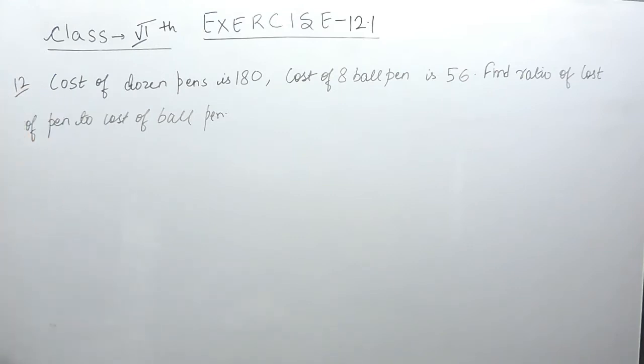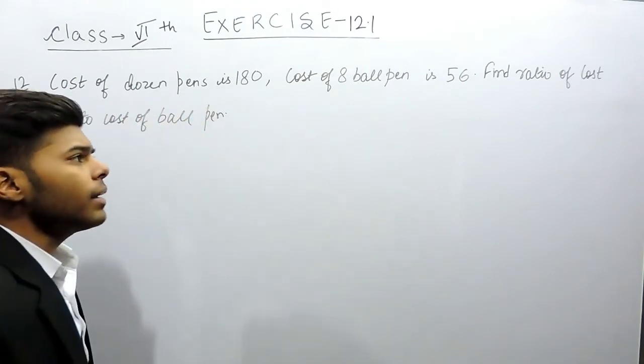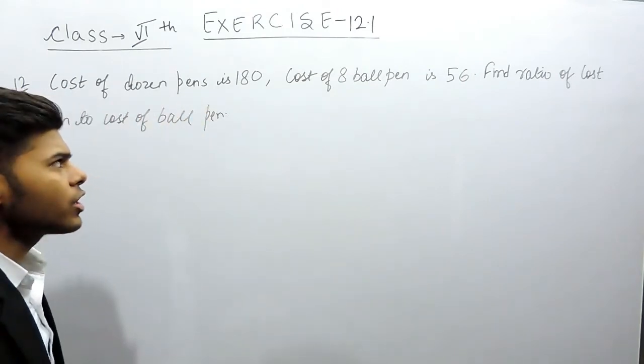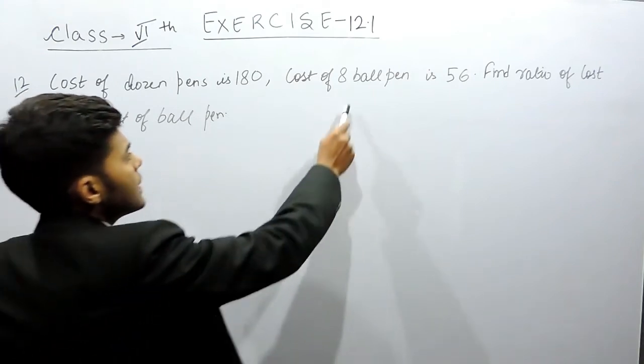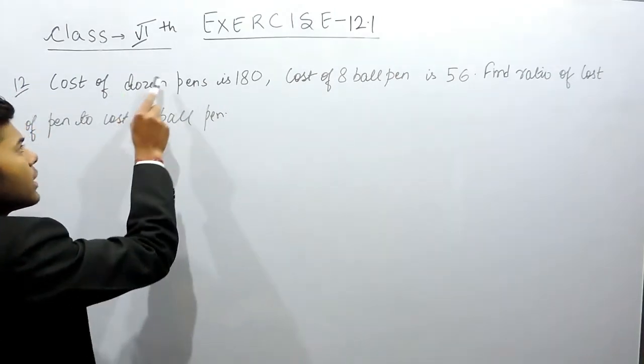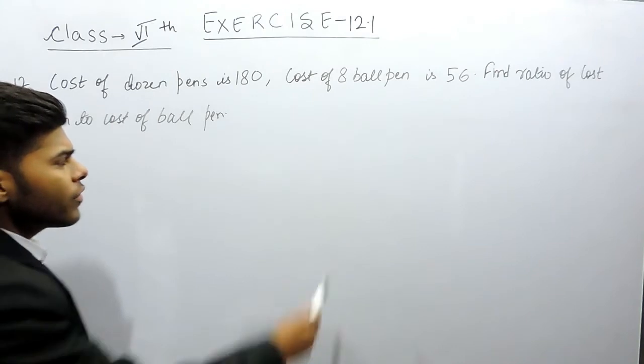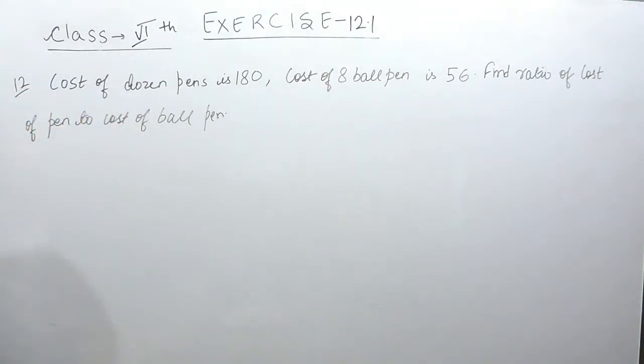The first way is that we should find the cost of one pen and the cost of one ball pen and then we can find the ratio. Or the second method is that we should make these pens equal, either we should make these 12 pens equal to 8 pens or we should make these 8 pens equal to these pens. So the best way is to find the cost of one pen.